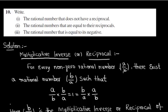For every nonzero rational number a/b, there exists a rational number b/a such that when we multiply a/b with b/a, we get the product as 1. In a similar manner, when b/a is multiplied with a/b, we get the product as 1.